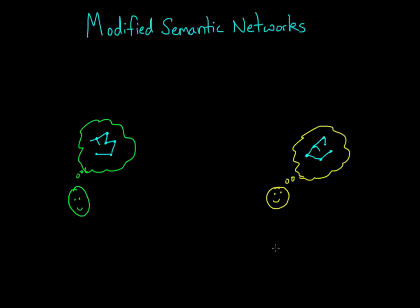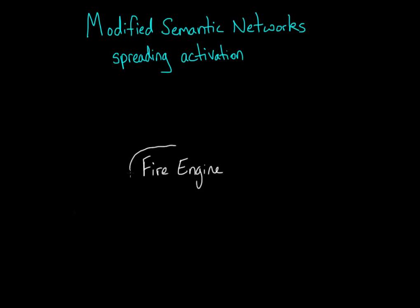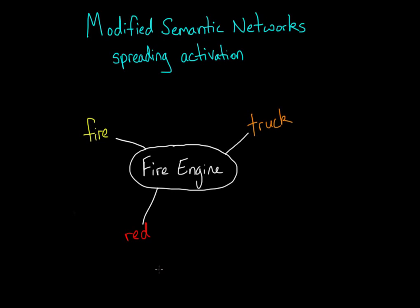One pretty cool thing about semantic networks is that all the ideas in your head are connected together. So when you activate one concept, you're pulling up related concepts along with it. This general elevation and availability is called spreading activation. For example, if I say 'fire engine,' not only do you think of a fire engine, but related concepts such as trucks, fire, and even the color red become activated, making it easier for you to retrieve or identify those items.